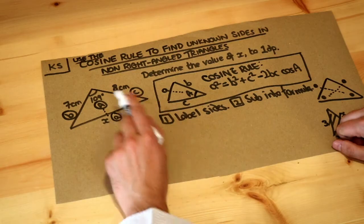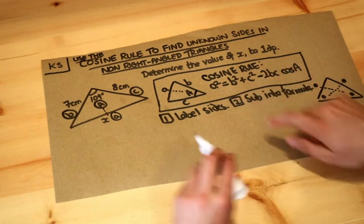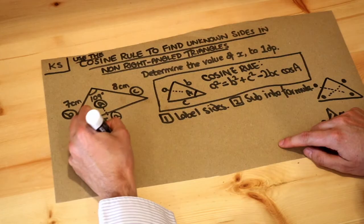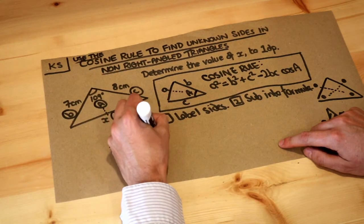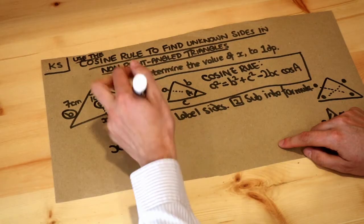So now we can substitute all these values into our formula. So a squared, that's x squared, is equal to b squared, that's 7 squared, plus c squared, that's 8 squared.